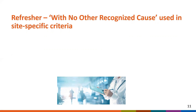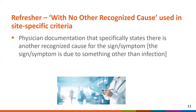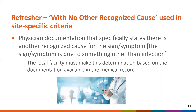Several of the Chapter 17 site-specific surveillance definitions that are eligible for organ space SSI allow for the exclusion of a sign or symptom due to another recognized cause. To clarify, in order to state there is another recognized cause for a sign or symptom, there must be physician documentation that specifically states there is another recognized cause for the sign or symptom — that the sign or symptom is due to something other than infection. The local facility must make this determination based on the documentation available in the medical record.